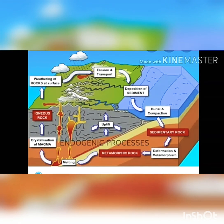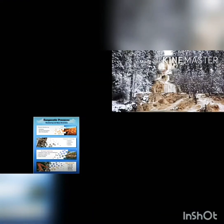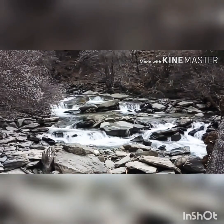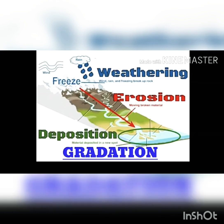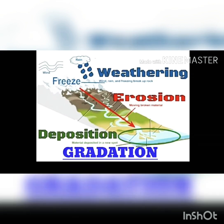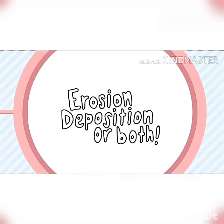The endogenic process leads to the upliftment and sinking of the earth's surface. The exogenic process is a continuous wearing down and rebuilding of the land surface. A new term here is gradation — the process of leveling of highlands through erosion and filling up the lowlands through deposition. The landscape is being continuously worn away by two processes: weathering and erosion.